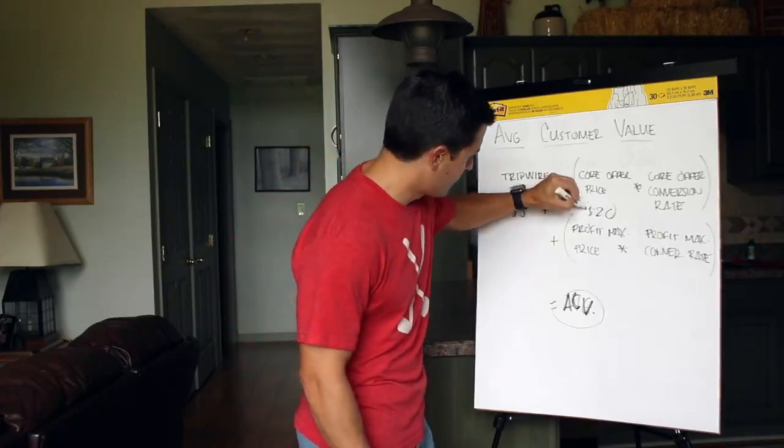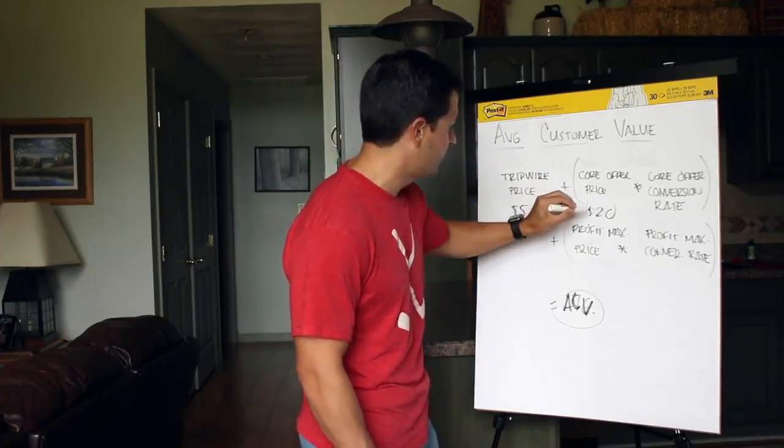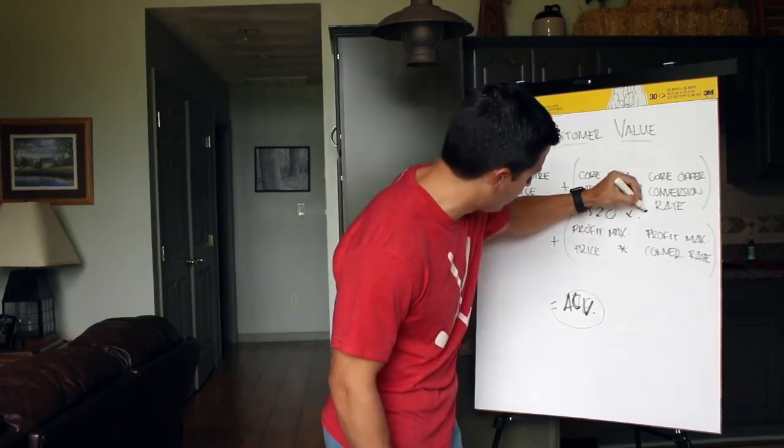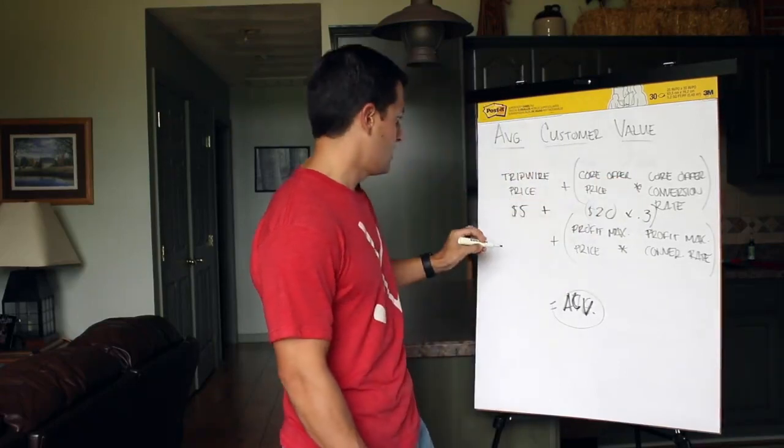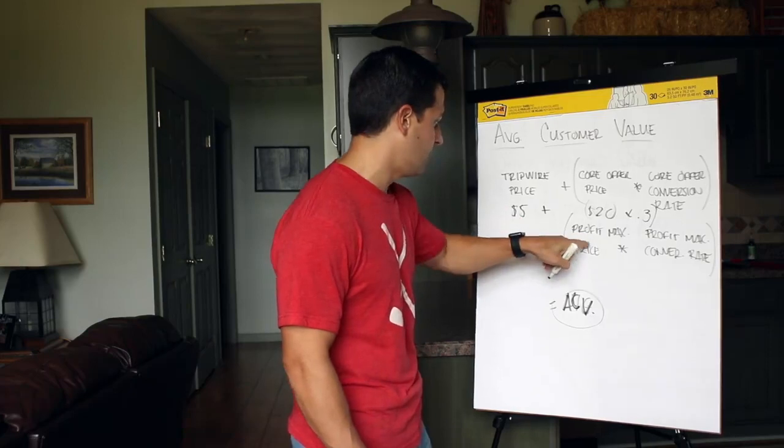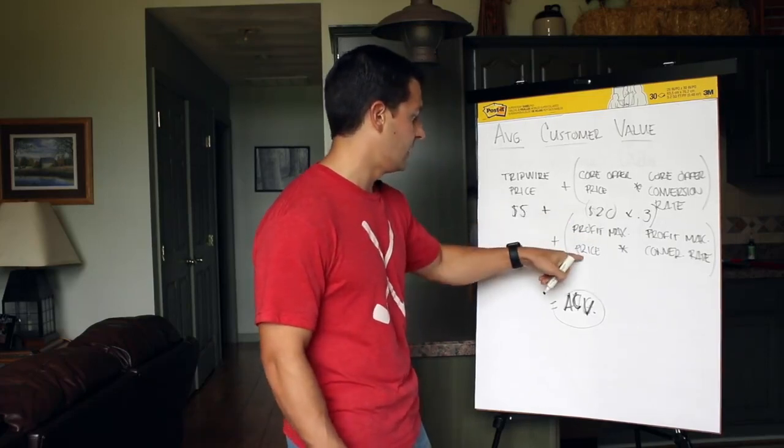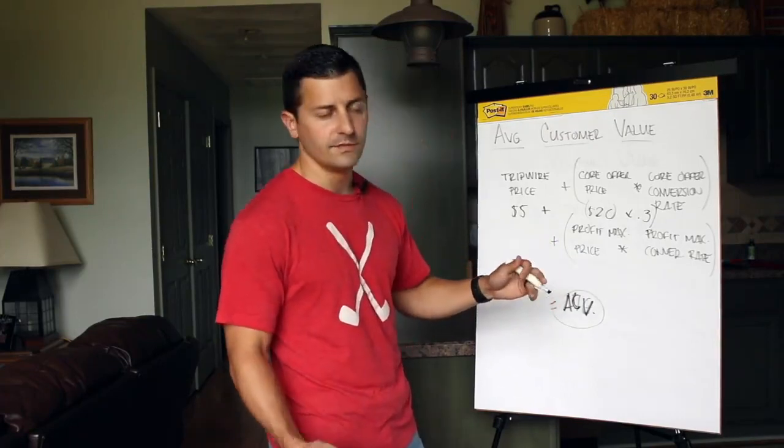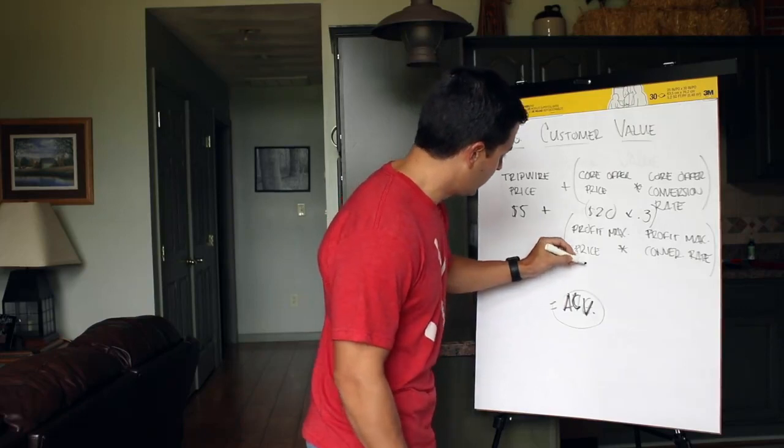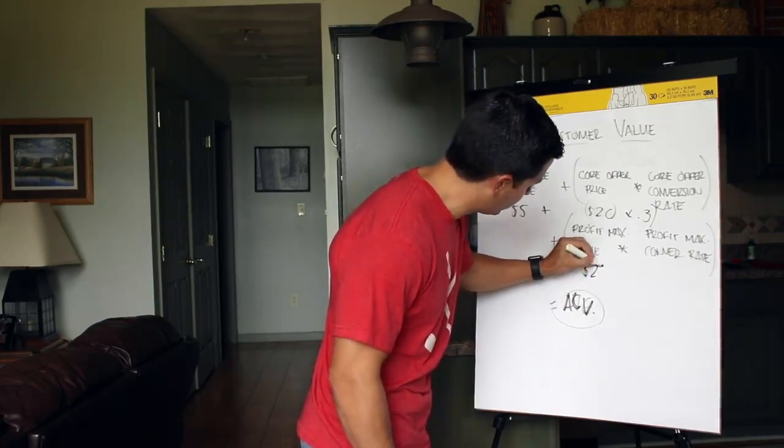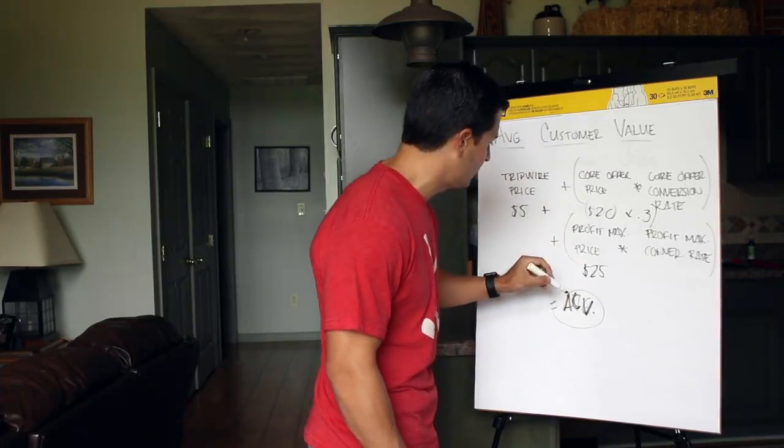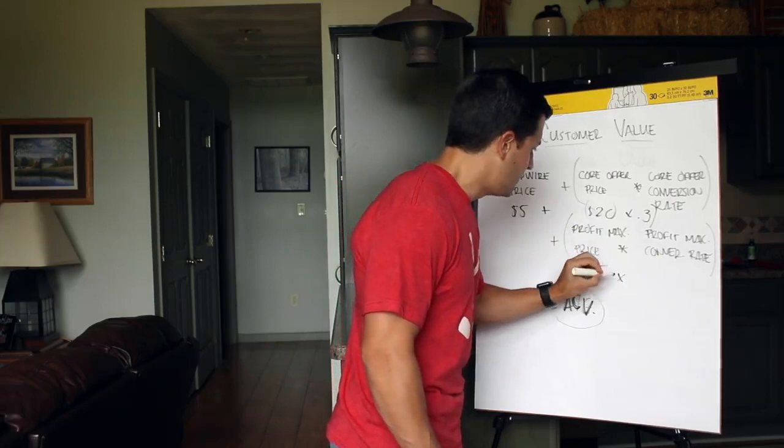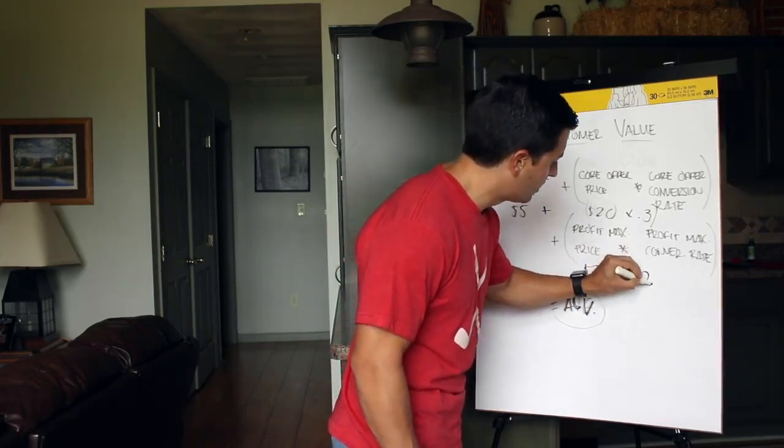So you take the five dollars from the tripwire plus the twenty dollars, and out of all those people, thirty percent converted. And you add that to the profit maximizer, which the third offer that they threw out there was if you came back in a third time they give you a free piece of cheesecake with your meal and the average value of those customers were twenty five dollars where they were clearing twenty five dollars every time they got them to purchase that.